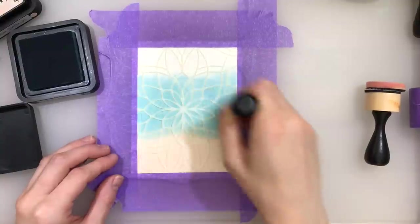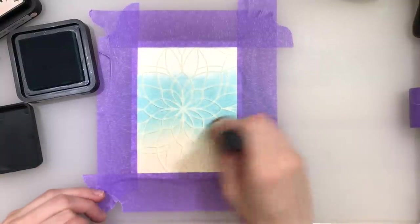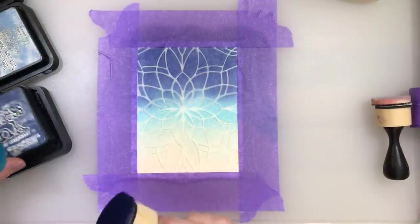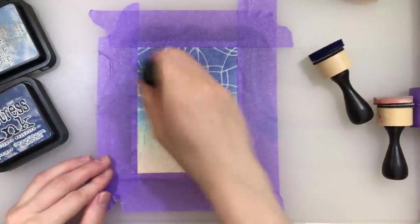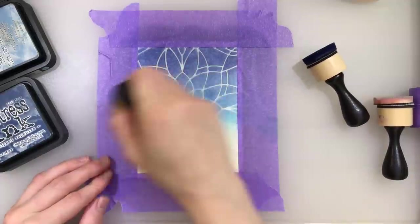The paper I'm using is some Strathmore Bristol paper because it blends really well with distress inks and other types of inks that you may have. So I'm going to carefully work this paper until I've blended these three colors across the entire background, creating a beautiful blend of color.